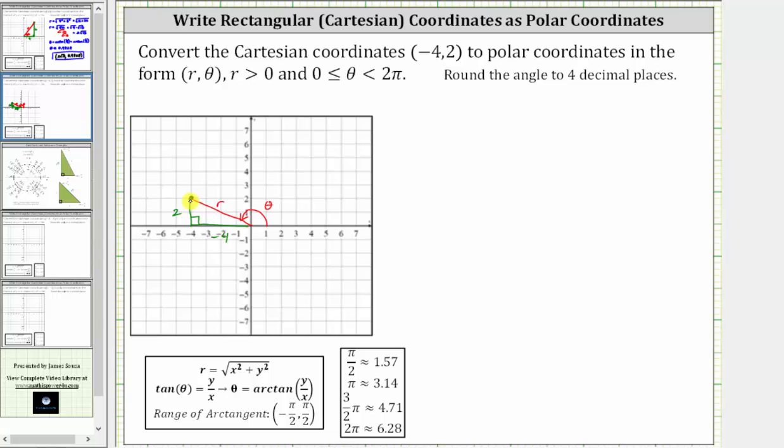Notice how r is the hypotenuse of the right triangle, which is why r is equal to the square root of the quantity x squared plus y squared. Remember, r can be positive or negative, but we are told for this problem, r should be greater than zero or positive.